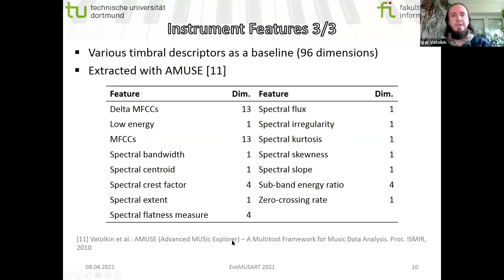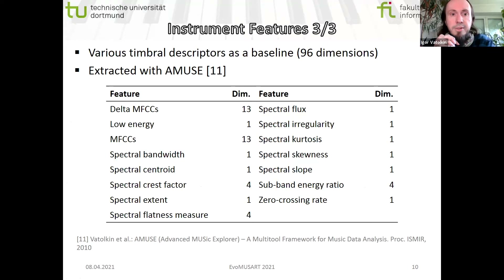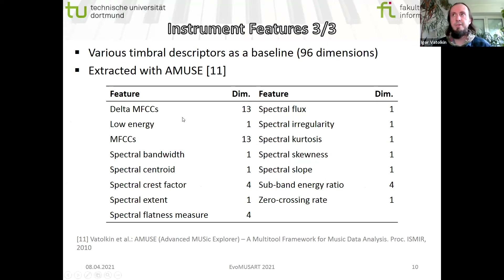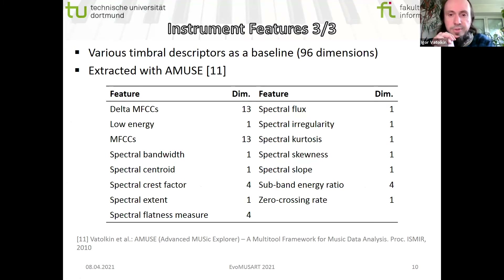The second baseline contains various timbre descriptors listed in a table: mel-frequency cepstral coefficients, spectral characteristics, zero crossing rate, and so on. The overall number of dimensions is 96.